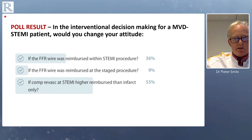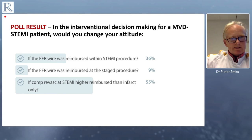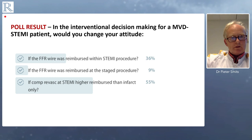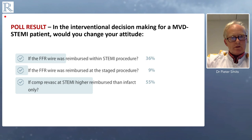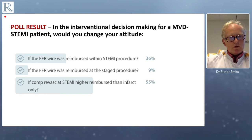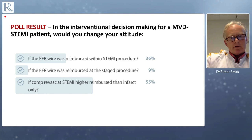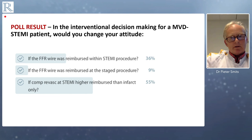It would be interesting to see if reimbursement really has an impact on treatment. And indeed we can see here nicely that if the FFR wire was reimbursed within the STEMI procedure, a lot of you would change your strategy in treating multivessel STEMI patients — very interesting to see. Also, if complete revascularization was higher reimbursed than infarct artery only, it's also interesting. These financial incentives we have to take into account, and I think we still have a lot of work to do with policy makers and insurance companies — if we want to treat the patient as best as possible, we should also be rewarded for that exercise and for all the material used during the procedure.